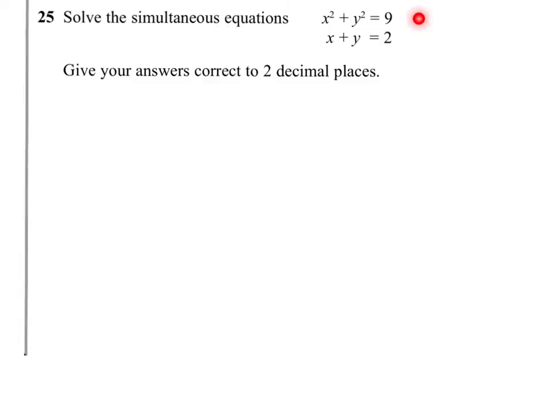We have one equation that involves squares and one that doesn't, so the only way we can do this is by the substitution method. We'll have to make either x or y the subject of the equation and drop it into the top equation. I'm going to let x be the subject in the second one, and x would equal 2 minus y.